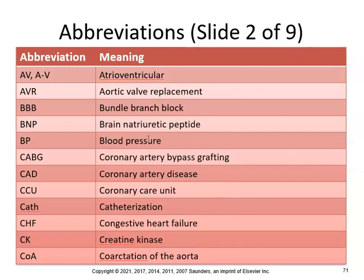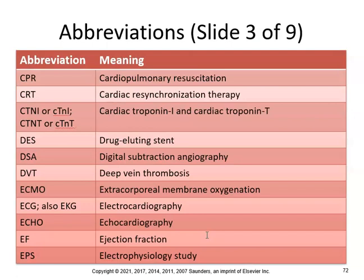In this class you just need to know the abbreviations, not the full mechanisms. For example, BNP stands for brain natriuretic peptide — you don't need to know what it does. Further abbreviations: CPR — cardiopulmonary resuscitation; CRT — cardiac resynchronization therapy; cTnI — cardiac troponin; DES — drug-eluting stent; DSA — digital subtraction angiography; DVT — deep vein thrombosis.